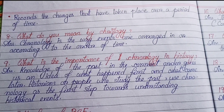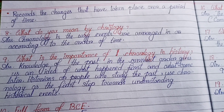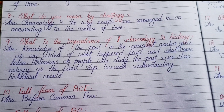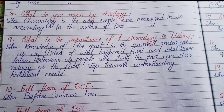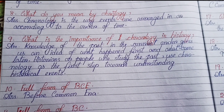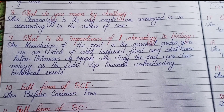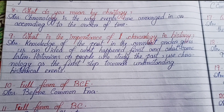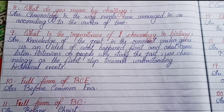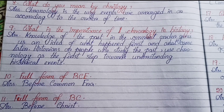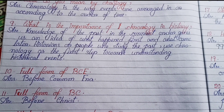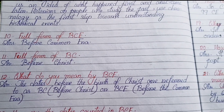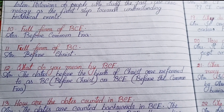Number eight: What do you mean by chronology? Chronology is the way events are arranged according to the order of time. Number nine: What is the importance of chronology in history? Knowledge of the past in the correct order gives us an idea of what happened first and what came later. Historians use chronology as the first step towards understanding historical events.